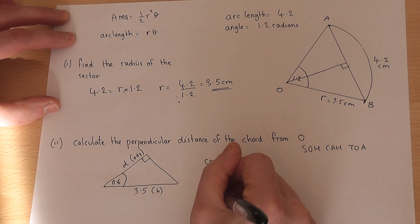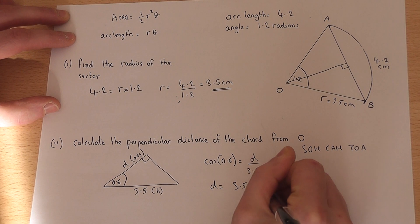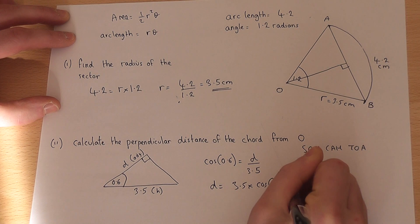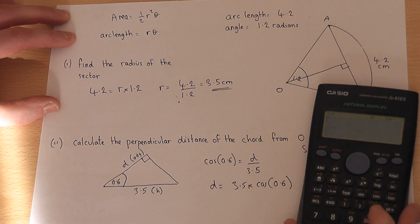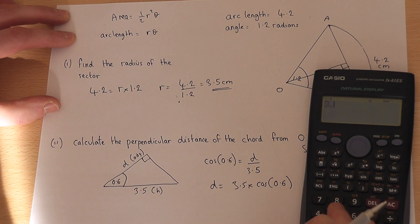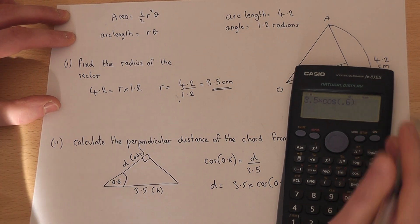So to find d, I just need to work out what 3.5 times cos of 0.6 is. Again, we must be in radian mode here, that's quite important. So I work out 3.5 times cos of 0.6,